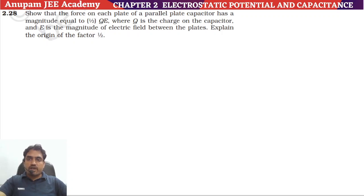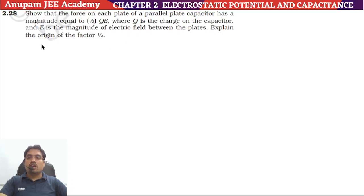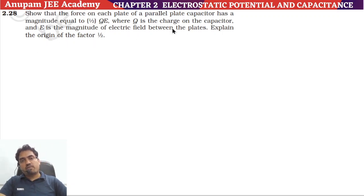Now question number 28: Show that the force on each plate of a parallel plate capacitor has magnitude equal to (1/2) Q times E, where Q is the charge on the capacitor and E is the magnitude of electric field between the plates. Explain what is the origin of the factor 1/2. This is an interesting question.